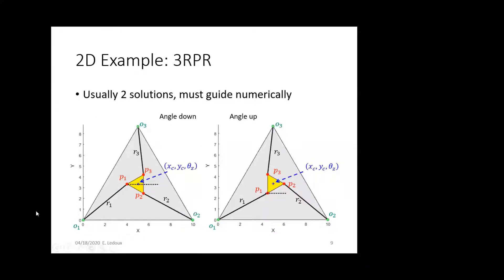For forward kinematics, there's going to be two solutions. So if you know the length of each of these legs, there can be two possible solutions for the pose of the end effector, basically the angle down or the angle up. So, you have to guide your solution numerically, just the same way as you guided inverse kinematics numerically for the serial manipulators. You have to kind of do a similar thing to guide forward kinematics numerically for the parallel robot.